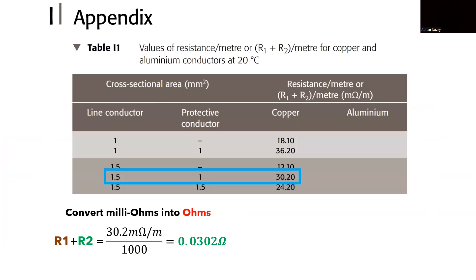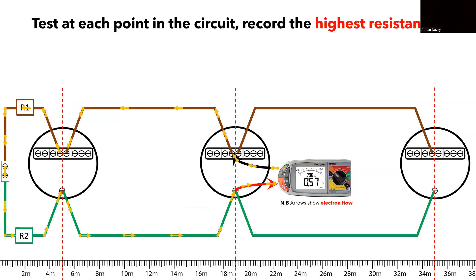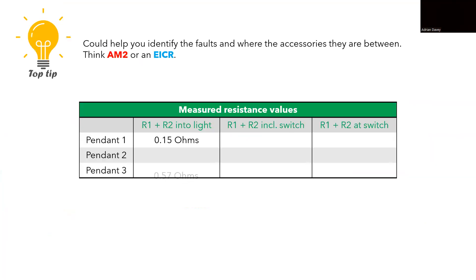Once again, we can cross-check the readings displayed on the meter to ensure their consistency with the expected values by referring to appendix I of the on-site guide. We are continuing to use twin and earth cable using a 1.5 mm-squared line conductor and a 1 mm-squared CPC, resulting in the same conversion to 0.03 ohms. Now, when we consider 19 meter distance from the previous slide, our calculation gives us an estimated reading of approximately 0.57 ohms. This further validates the reading we obtained for the second light on the supply side. We can now document this reading on our results table.